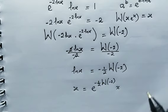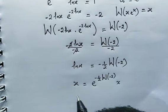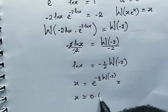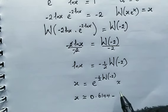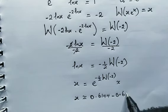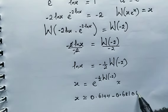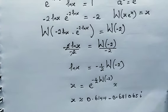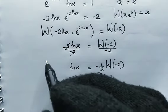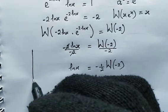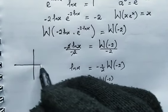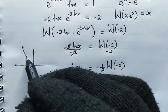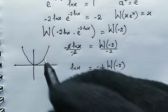And guess what? Using my calculator, I found out that x here is a complex number: 0.6144 minus 0.681065i. And this is the right answer. This equation has no real solution. Now take note of this — the graph of this equation looks exactly like this, and it's a very good way to show that the equation has no real solution.